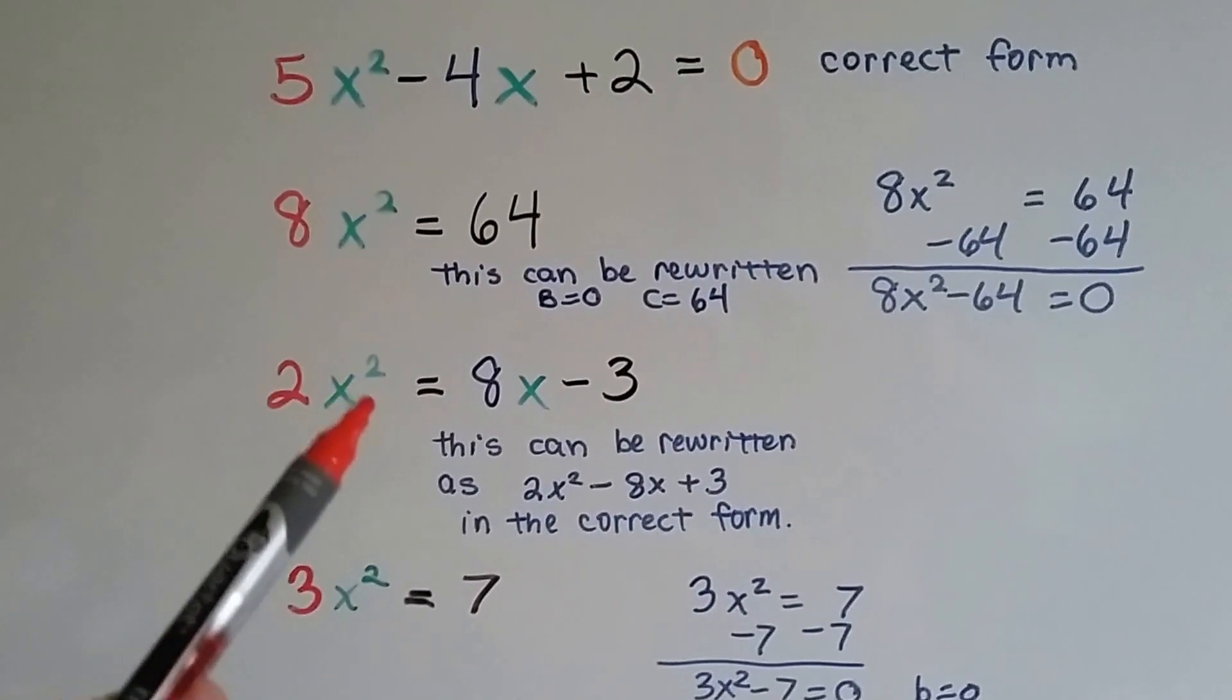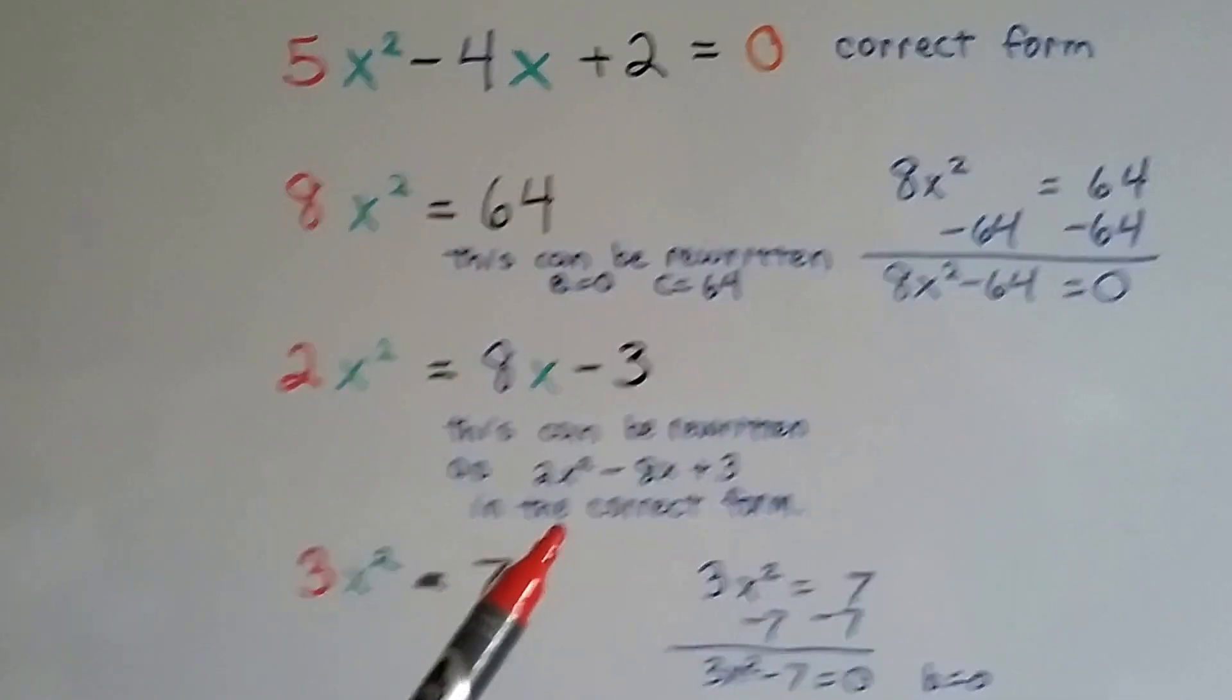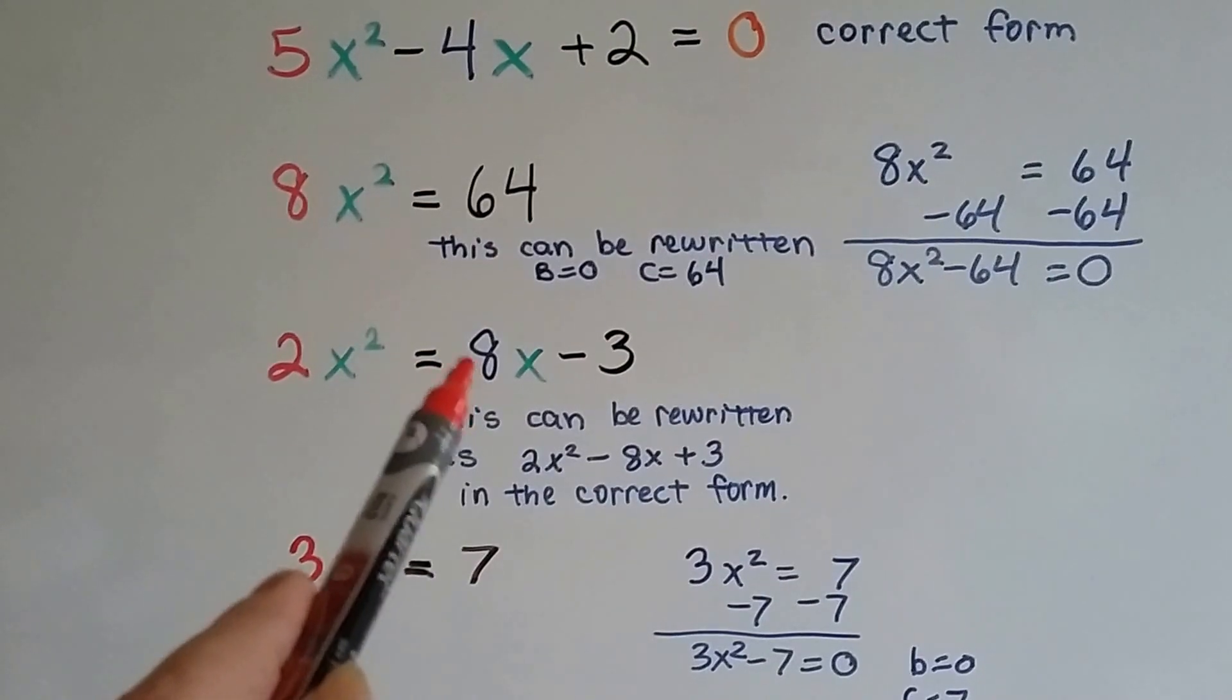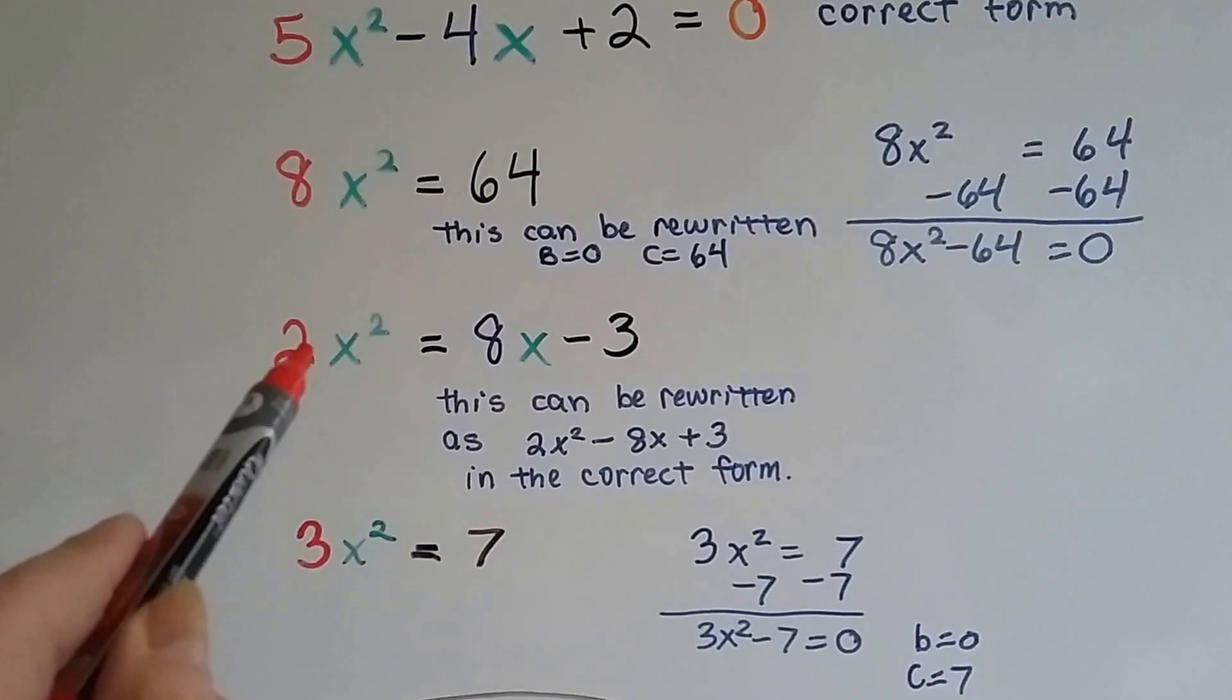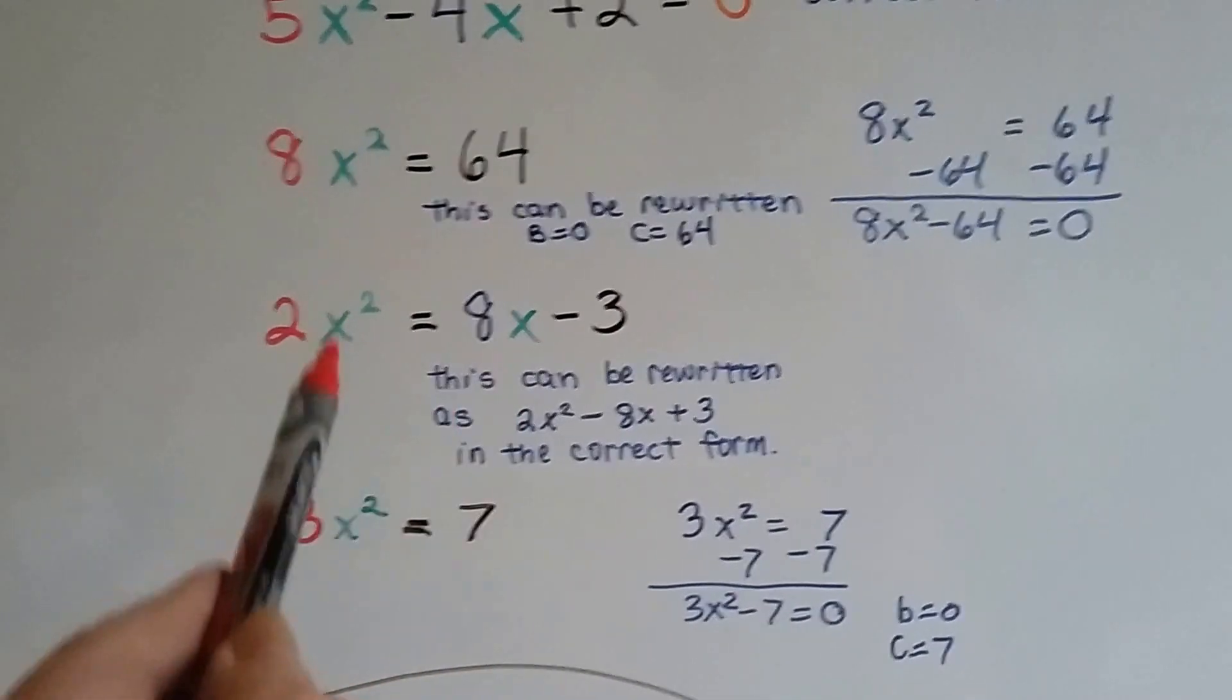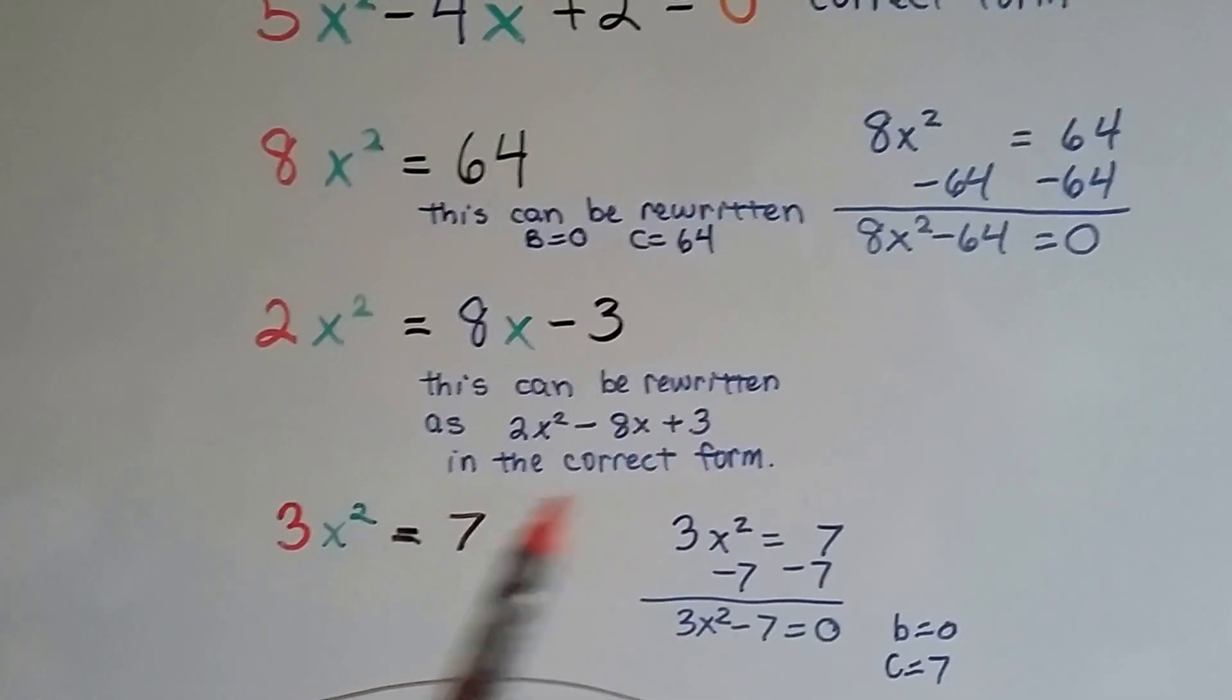For 2x squared equals 8x minus 3, this can be rewritten into the correct quadratic form because all we have to do is subtract this 8x minus 3 from both sides, and that'll just move it over here. And then it'll look like this. It starts out as a positive 8x, but once we subtract it from each side, it's going to be on this side as a negative 8x plus 3. See that?